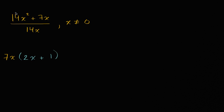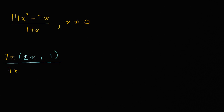One way to think about it is we used the distributive property in reverse. If you were to expand again: 7x times 2x is 14x², and 7x times one is 7x. Now let's factor 7x out of the denominator. 14x can be rewritten as 7x times two.